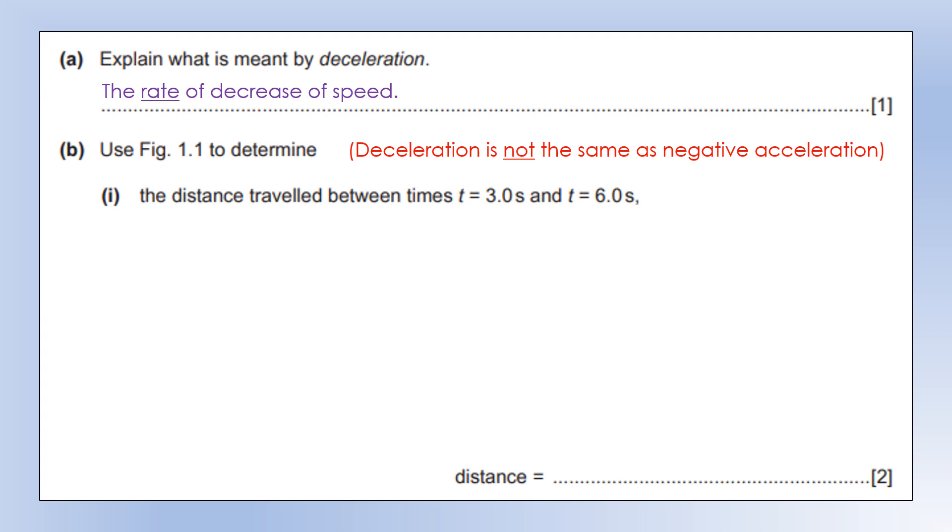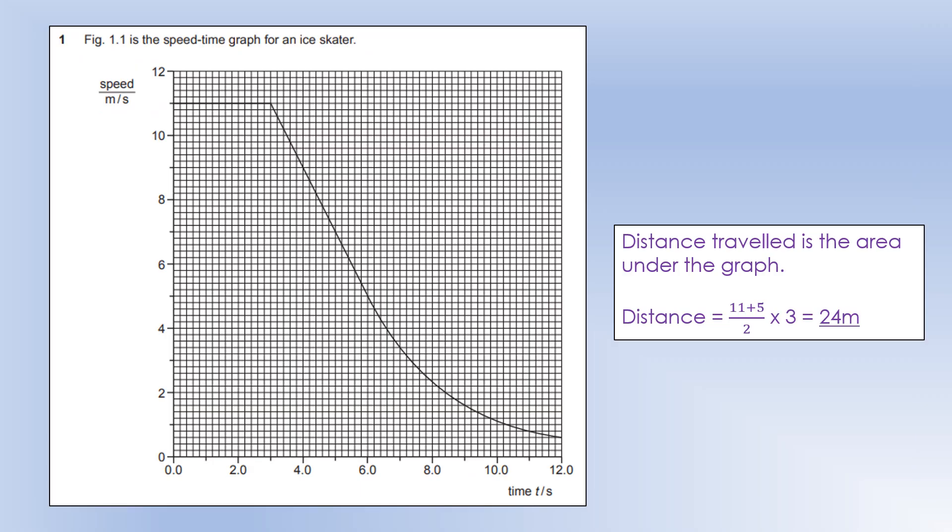Use the diagram to determine the distance travelled between times 3 seconds and 6 seconds. So distance travelled is the area under the graph. Between 3 seconds and 6 seconds, you want this area here, which is a trapezium. We're going to do the average of the sides times by the base, giving us 24 metres.